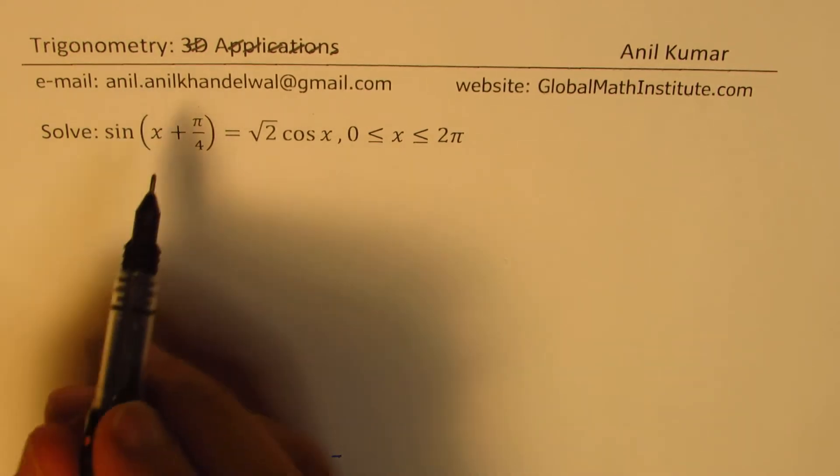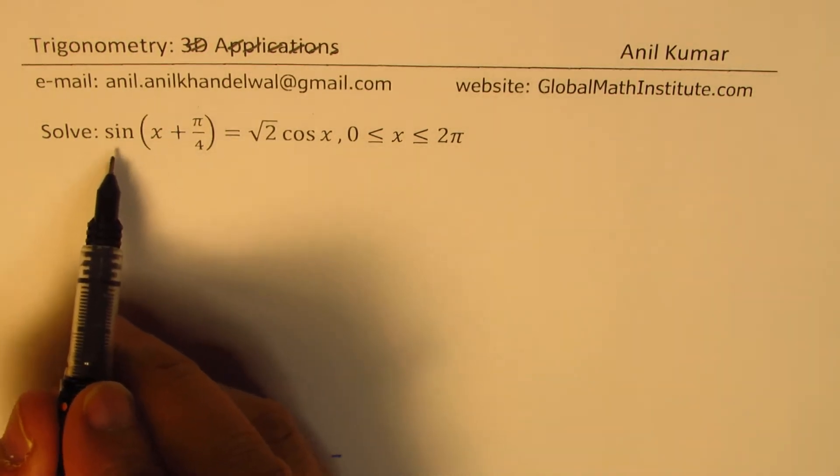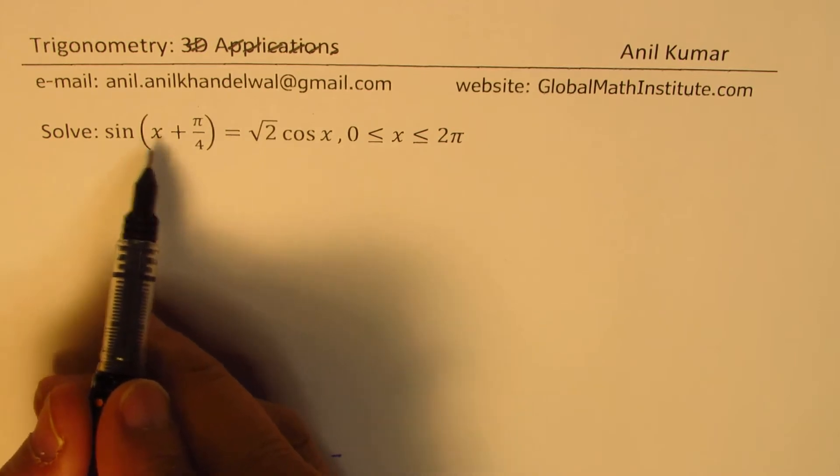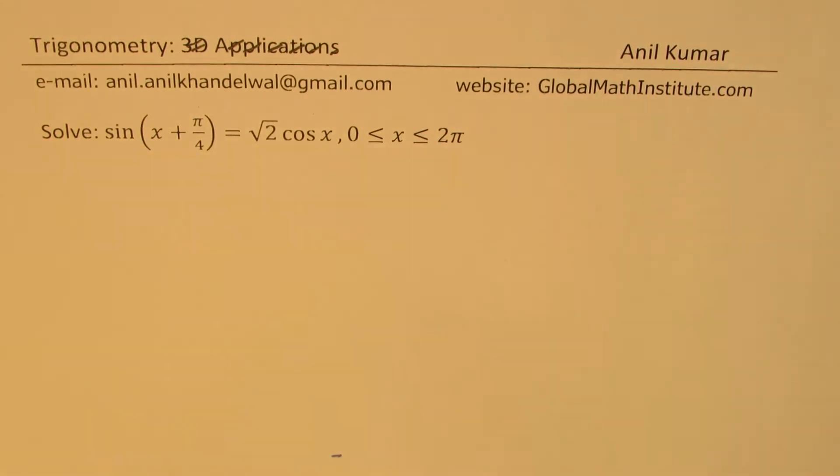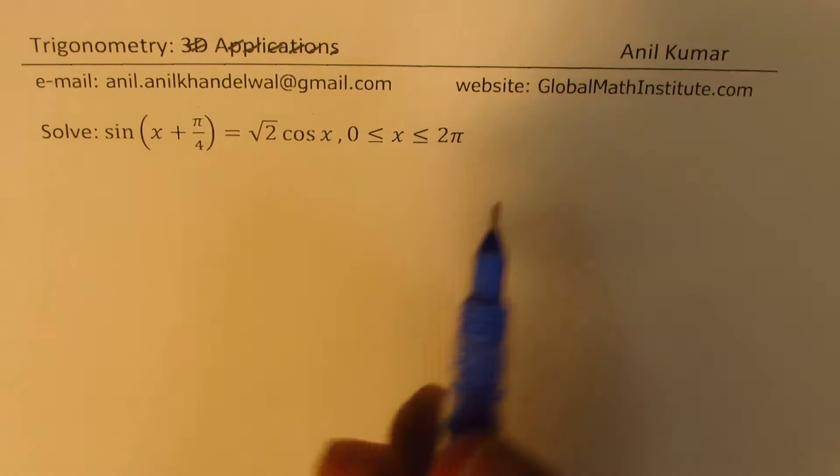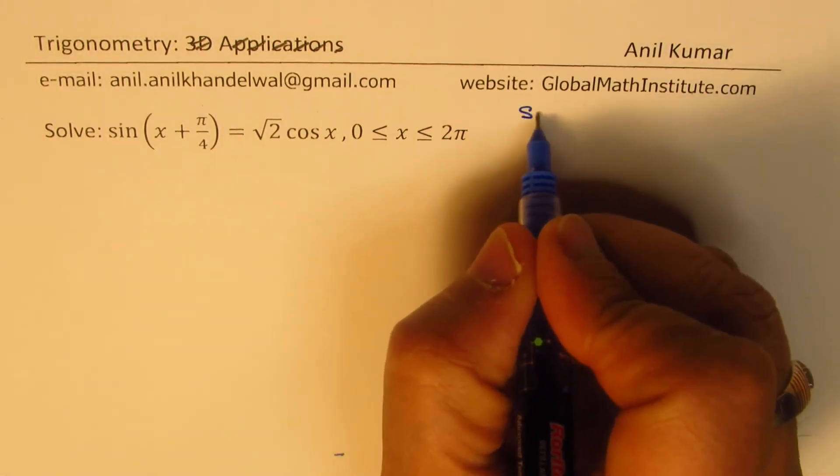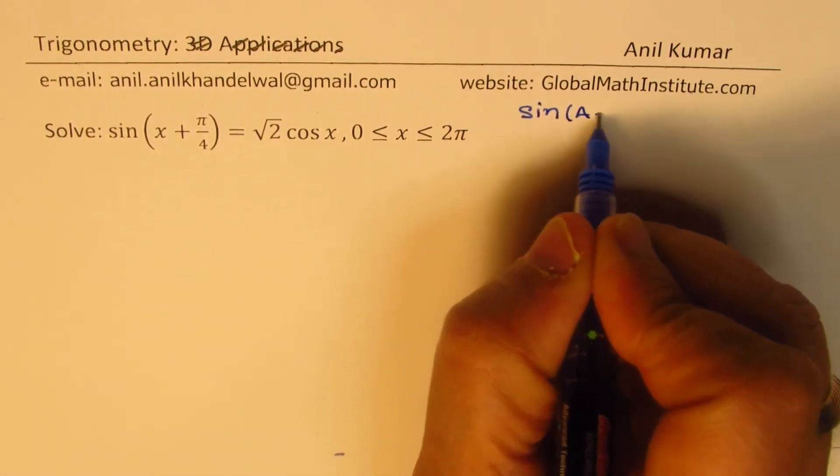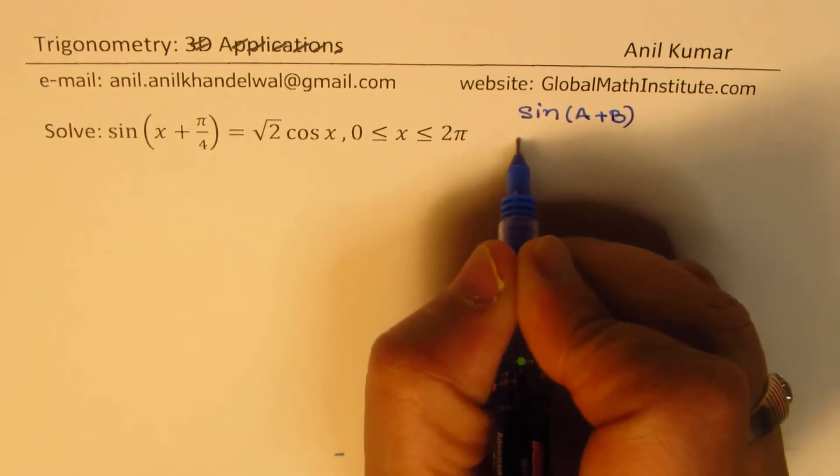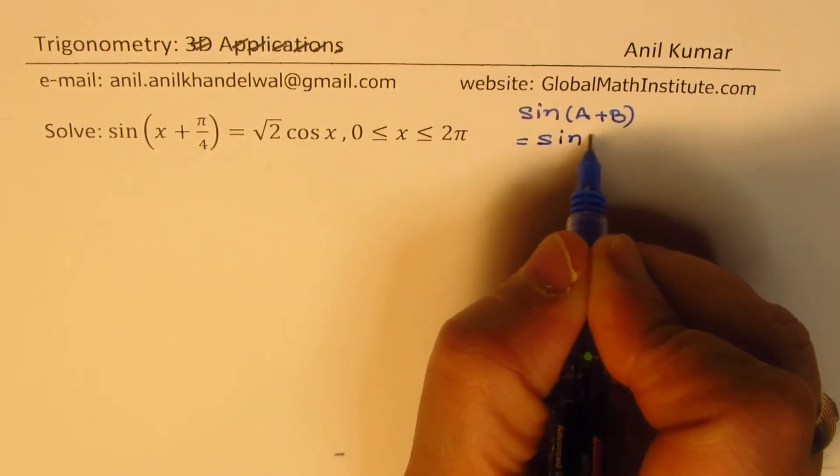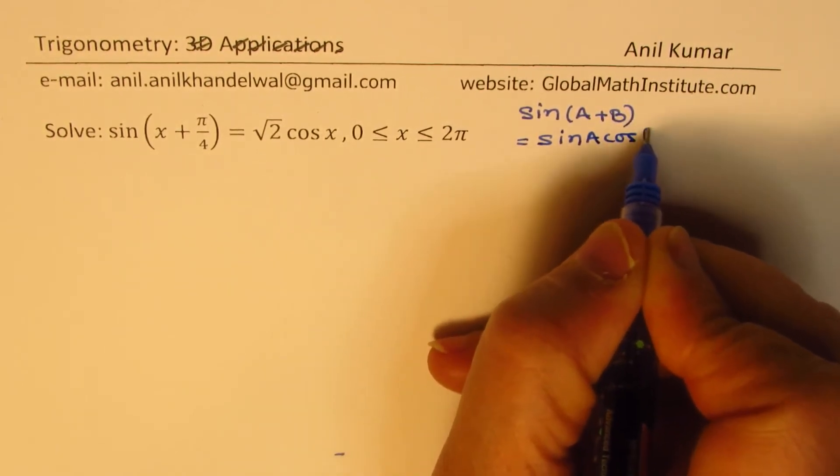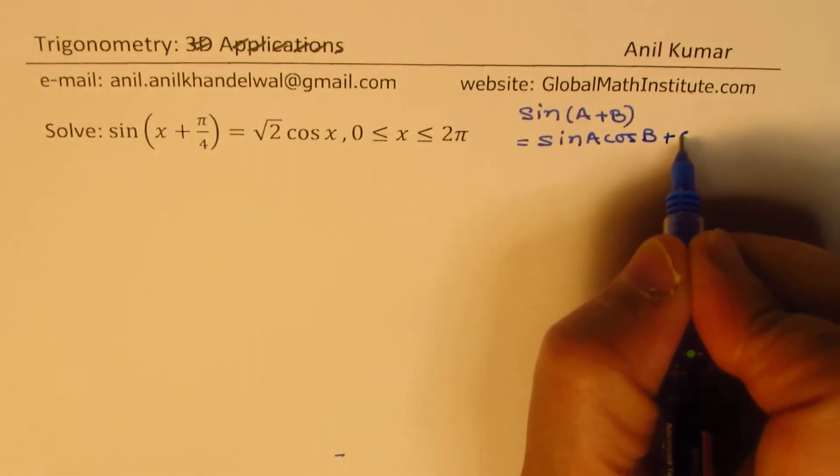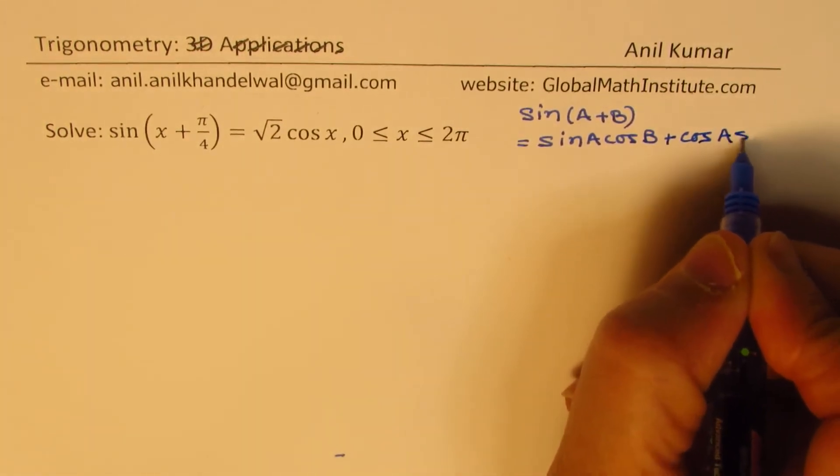Now in this case, it would be good practice to expand the left side using the sin(a + b) formula. I hope you remember the formula. Let me rewrite it here: sin(a + b) = sin a cos b + cos a sin b.